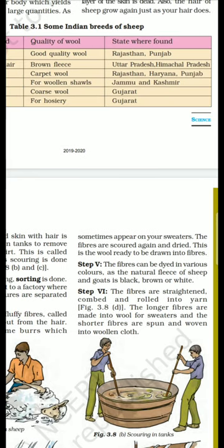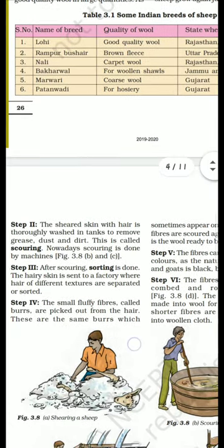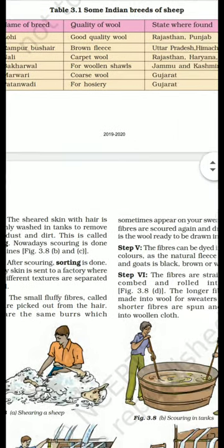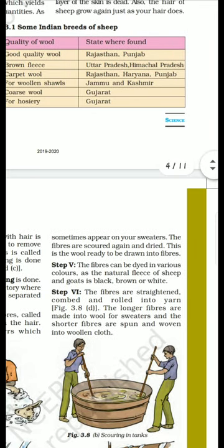The fibers are scoured again and dried. This is the wool ready to be drawn into yarn. The fibers can also be dyed in various colors, as the natural fleece of sheep and goat is brown, black, and white.